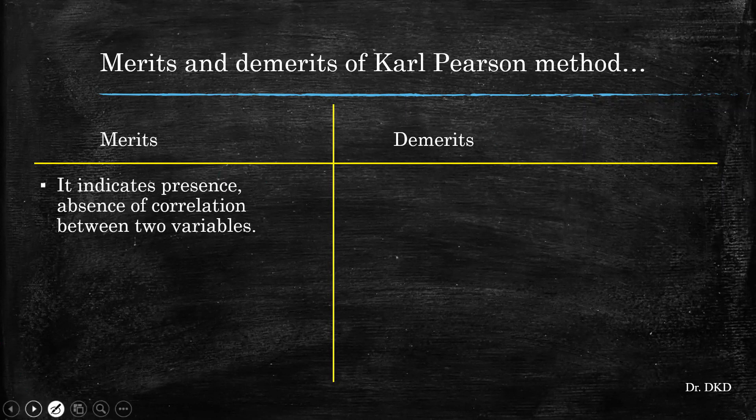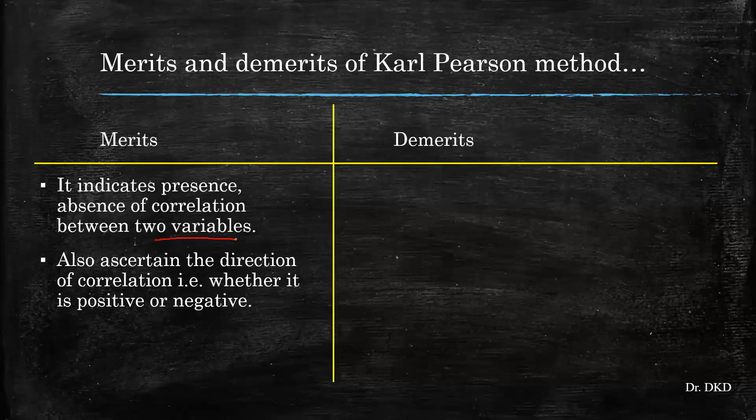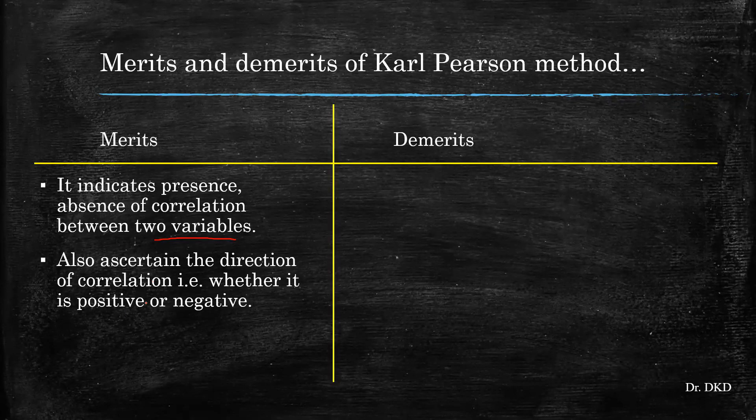It indicates presence or absence of correlation between two variables. It also ascertains the direction of correlation, whether it is positive or negative.